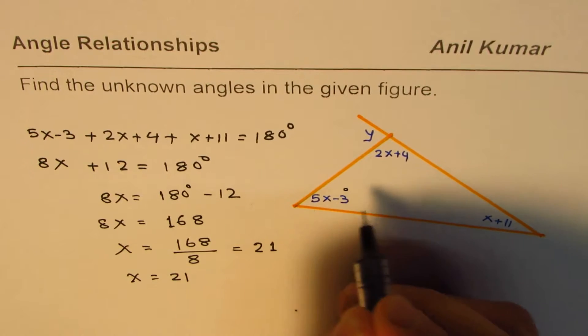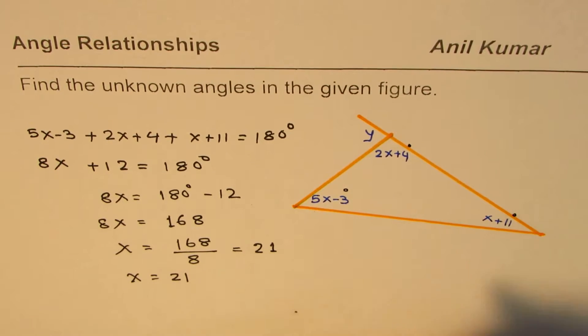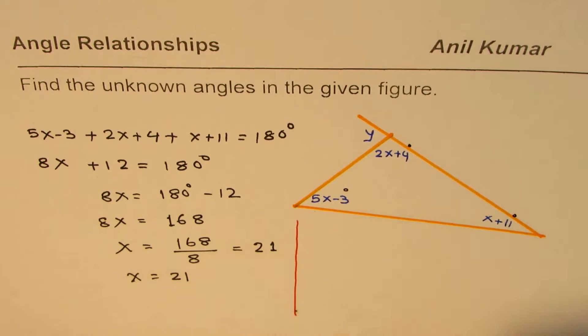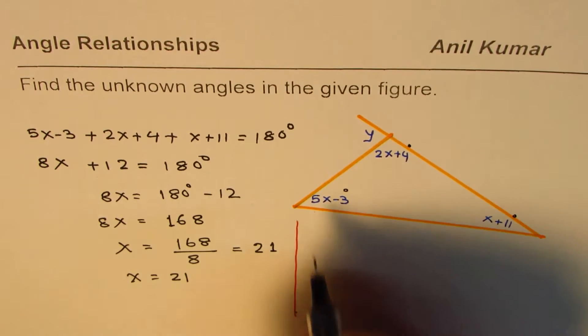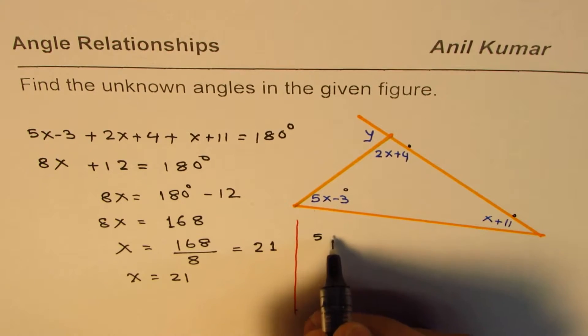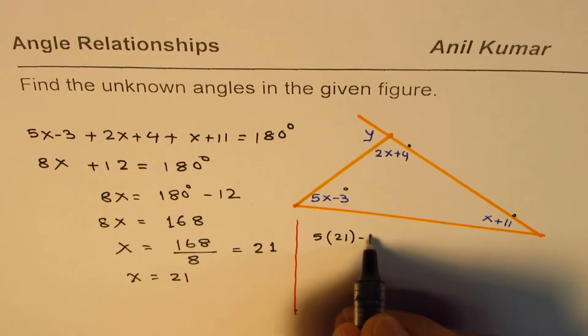Now all these angles are in degrees, so let me write degrees here. Now once we know x, we can find all the angles. So the first angle here, which we wrote 5x, x is 21, let me write 21 here, minus 3.